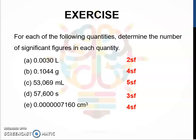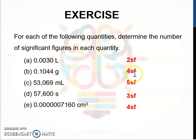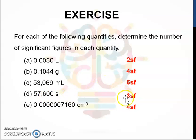Here are some exercises. For number A: 0.0030 has 2 significant figures; 0.1044 grams has 4 significant figures; 53,069 miles has 5 significant figures; 57,600 seconds has 3 significant figures; and the last one has only 4 significant figures.